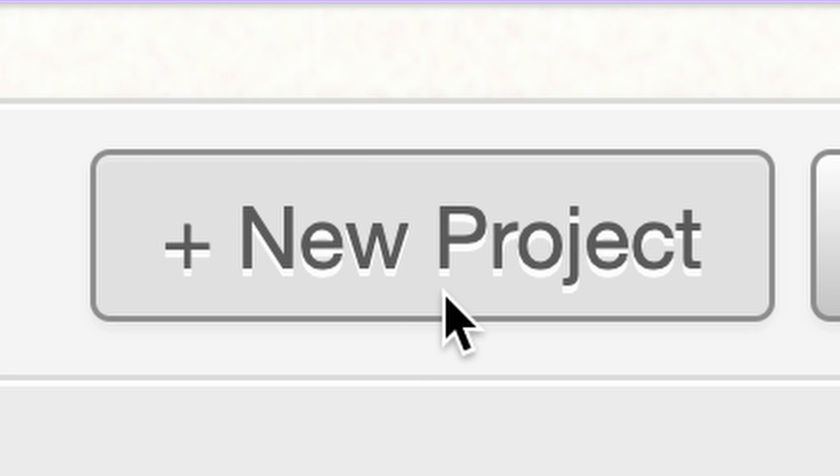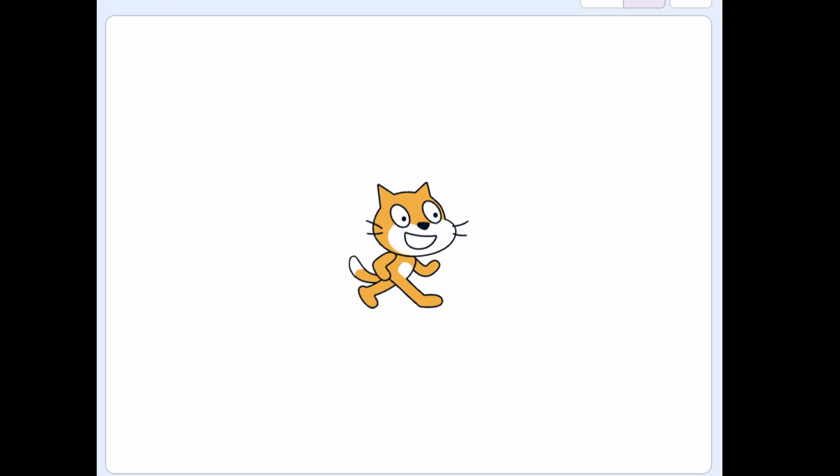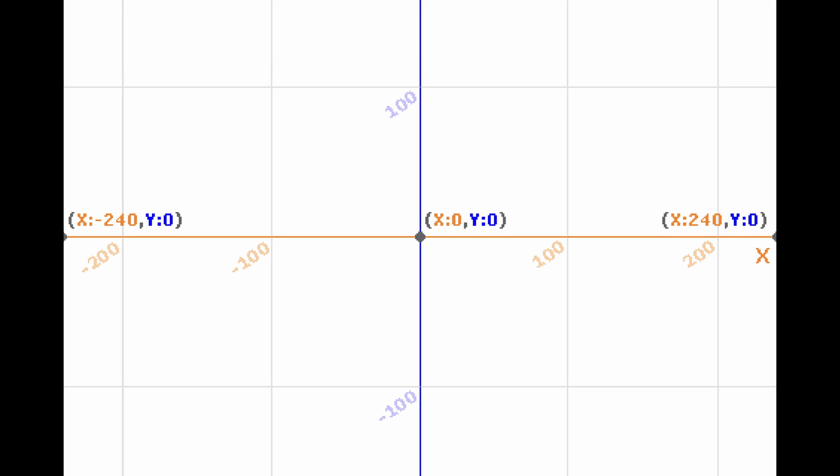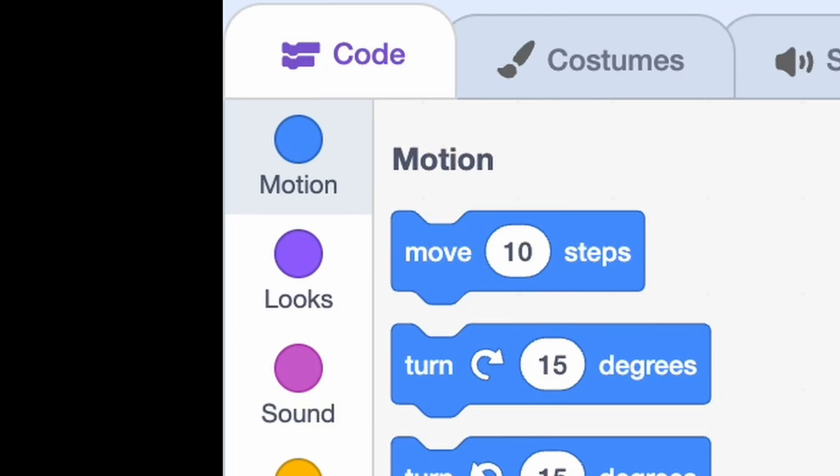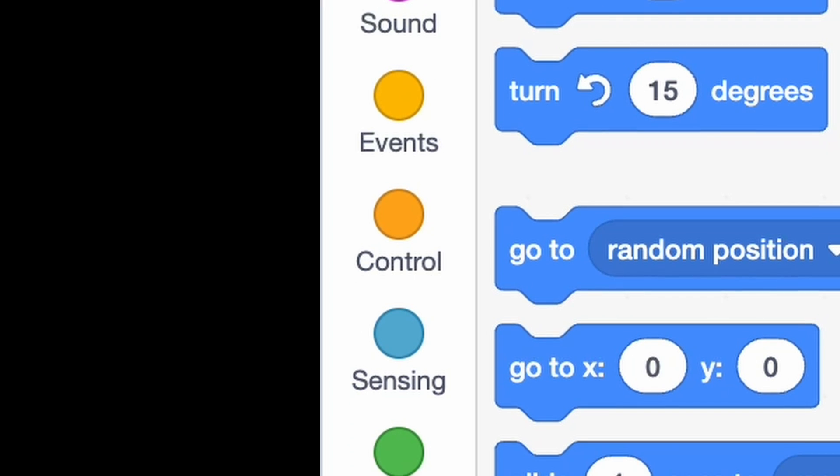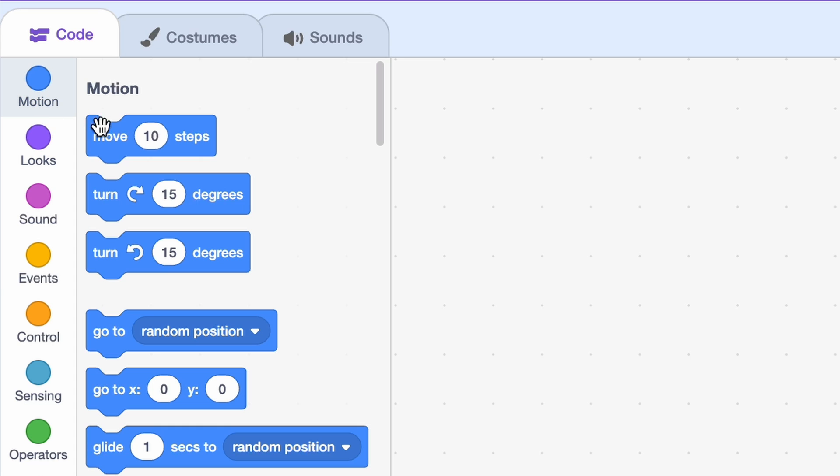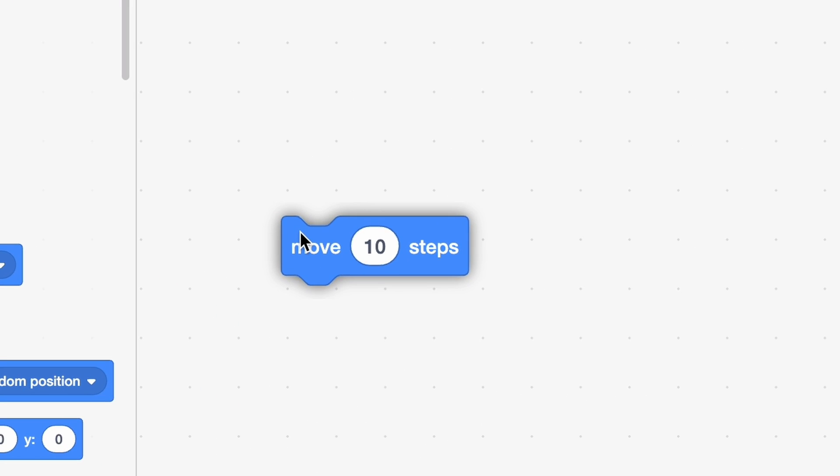When a new project is created, a Scratch cat appears in the middle of the project window, which is a simple XY coordinate plane. To make changes to the project window, you can then choose from any one of the blocks in the categories on the left and drag it into the code area to use in your project.